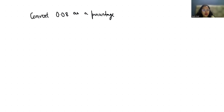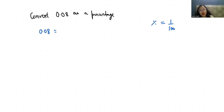So 0.08 is right now in decimal form and we have to convert it to percentage form. This is the symbol of percentage and it denotes 1 by 100. So that means in place of 1 by 100 you can write this symbol, or in place of this symbol you can write 1 by 100.